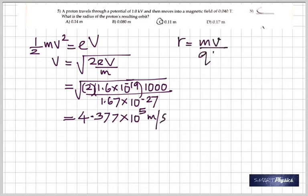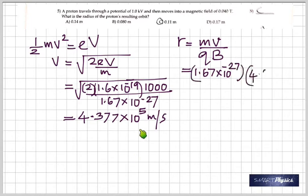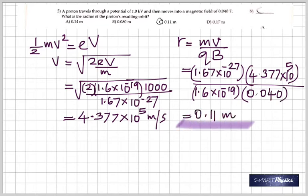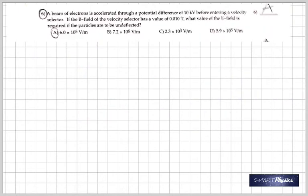To find the radius in a magnetic field, the formula is r = mv divided by qB. Using the mass of the proton, the velocity we calculated, the charge, and the strength of the magnetic field of 0.040 tesla, you get the answer: 0.11 meters.